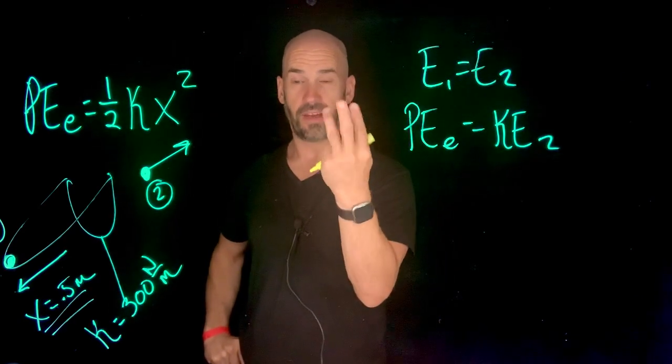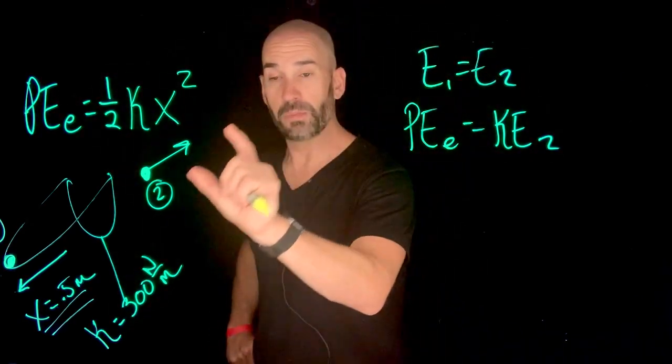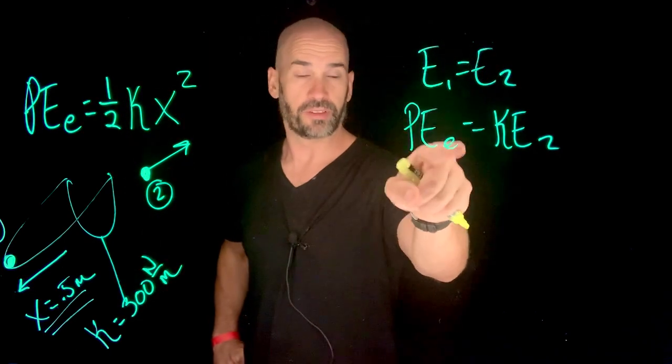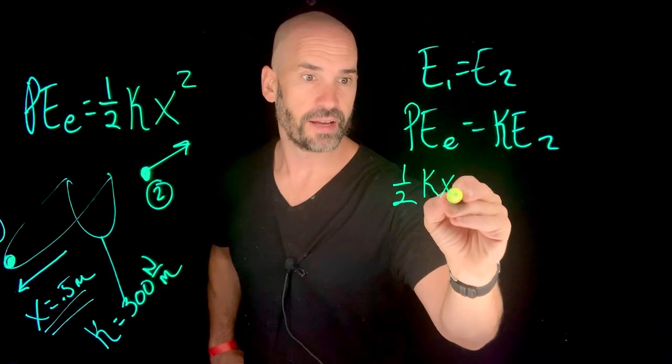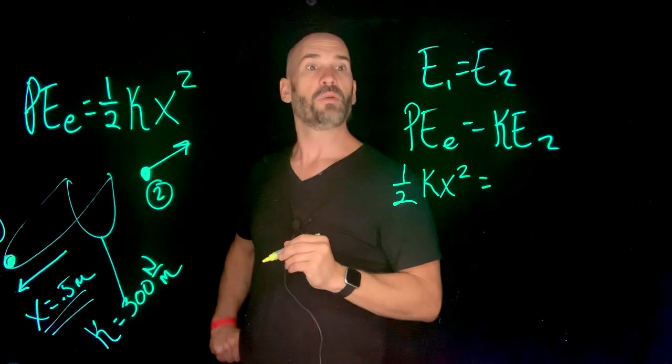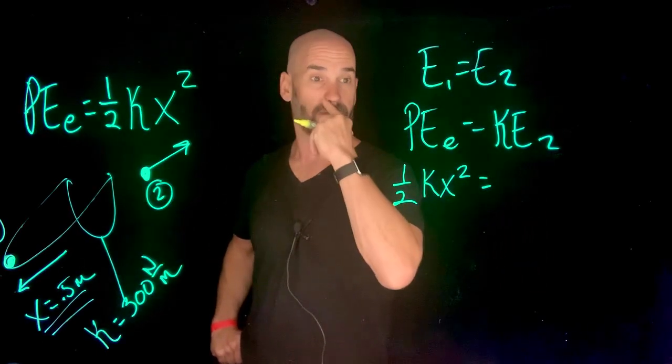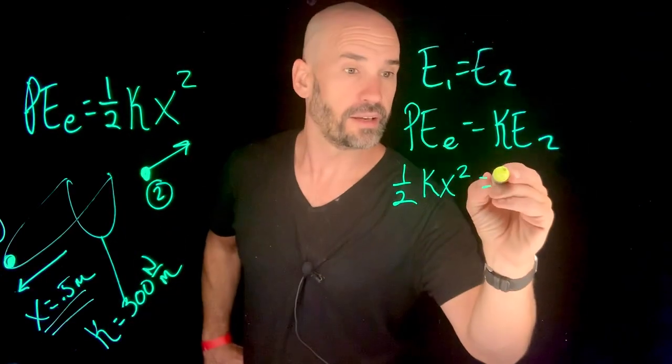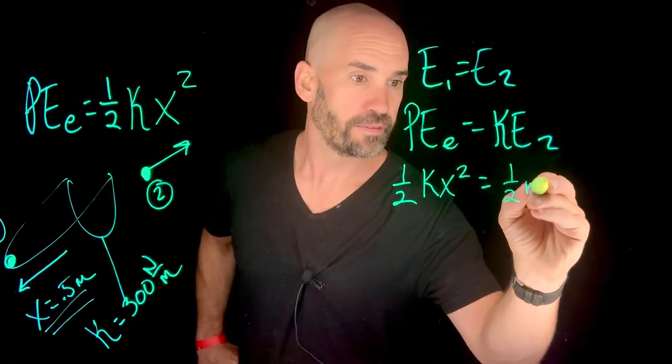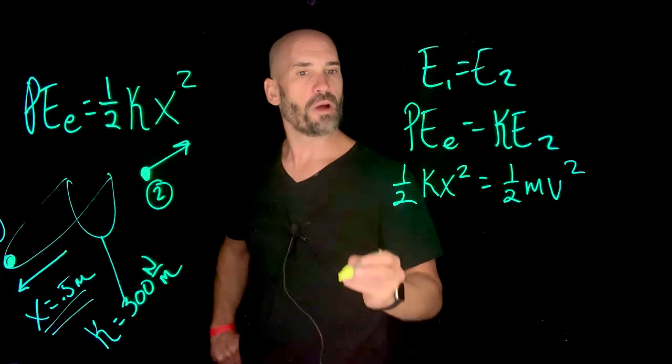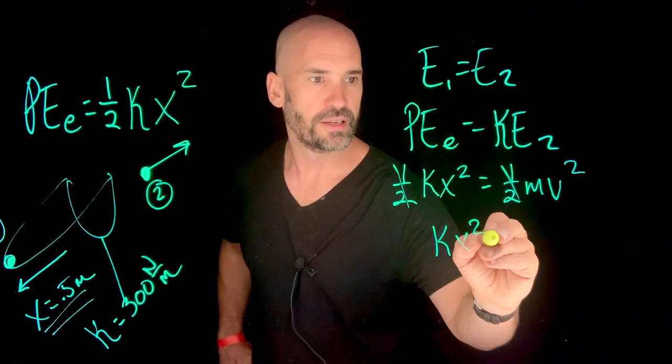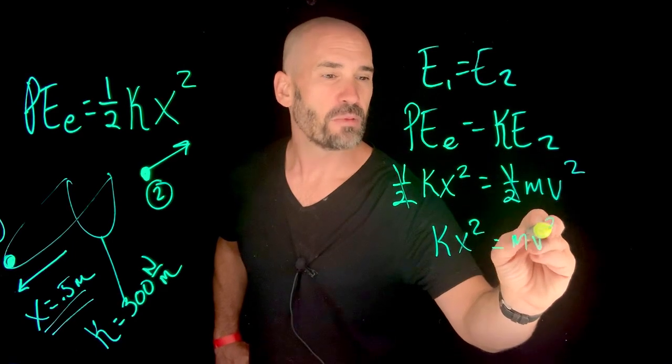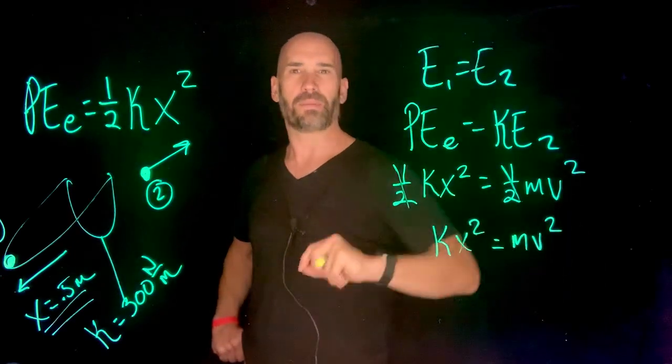Third step of any conservation of energy problem. We plug in our equations. We know that the equation for potential energy is one-half kx squared. And we know that the formula for kinetic energy is one-half mv squared. Right away, we could see that these one-halves cancel. So we have kx squared equals mv squared. And we need to know what is the mass of that pebble.